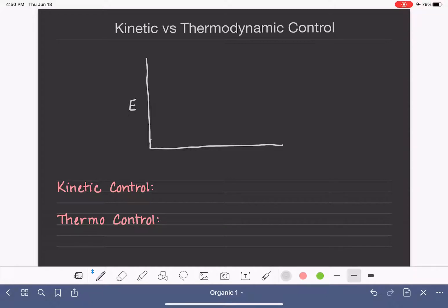This is going to be a graph of energy versus time for a chemical reaction, and the energy increases as we go up this axis, and the time obviously increases as we go from left to right.